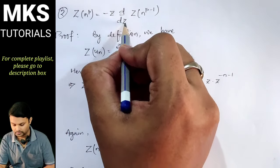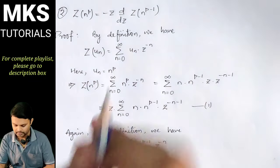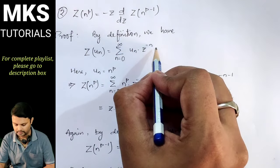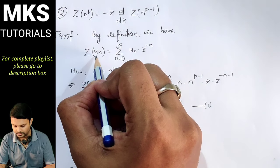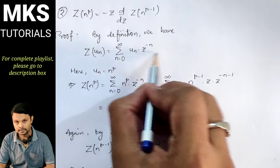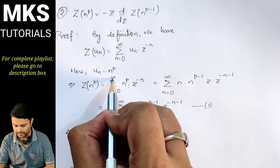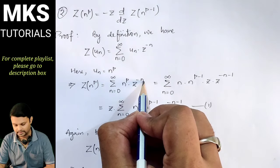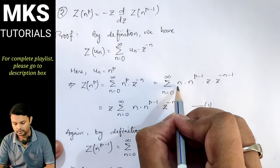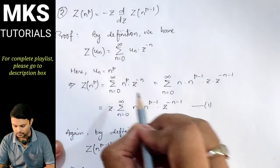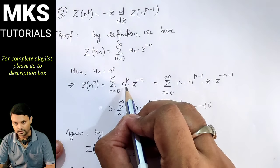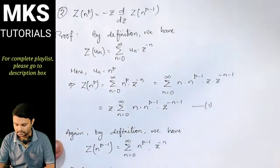Note that the z written here is small z. Now we come to the second proof. The second formula to prove is: Z-transform of n to the power p equals minus z times d/dz of Z-transform of n to the power p minus 1. By definition, Z-transform of u(n) is equal to summation n equal to 0 to infinity of u(n) into z to the power minus n.